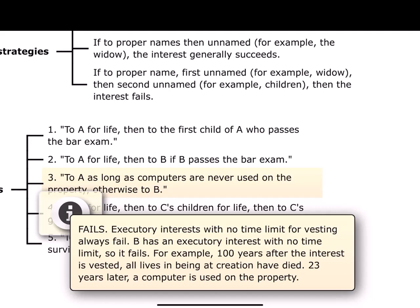What I wind up with is a fee simple absolute to Barry. Zach and his heirs have no interest in Greenacre. There's a possibility that Zach's interest would not vest until 100 years after he dies and everyone else in the fact pattern is dead — that means it fails. It is not a valid executory interest because it violates the rule against perpetuities.